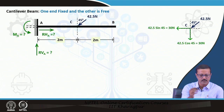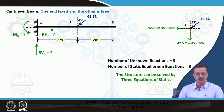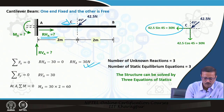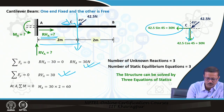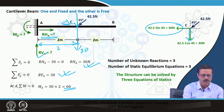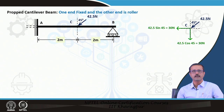For a cantilever beam example, the 3 unknowns are solved using the 3 static equations: sigma Fx gives R_HA = 30; sigma Fy gives R_VA = 30; and sigma M = 30 × 2 = 60 N·m. All three unknown values are obtained successfully from the equations of statics.